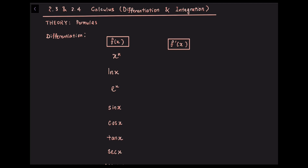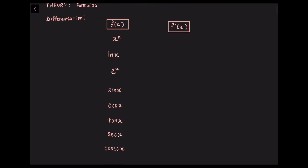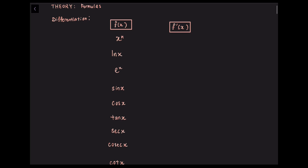Let us start with some differentiation formulas. If we differentiate x to the power of n, we will get n times x to the power of n minus 1. Differentiating ln x, we will obtain 1 over x. Differentiating e to the x, we will get e to the x.